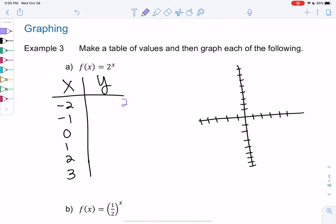So 2 to the negative 2 will be 1 over 2 squared, which is 1 fourth. So negative 2 and 1 fourth. We go left negative 2 up to 1 fourth. 2 to the negative 1, we just flip immediately and we get 1 over 2 to 2 to the 1, which is just 1 half.